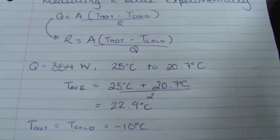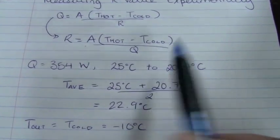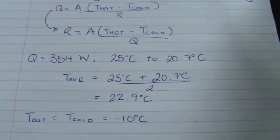We can now plug these values into our equation, R is equal to A times T-hot minus T-cold, all over Q, in order to find a number for our R value. Let's proceed.